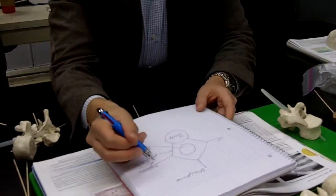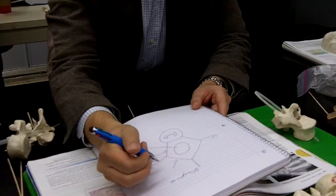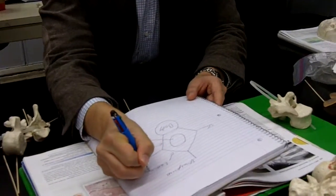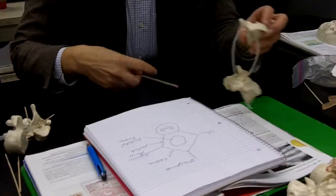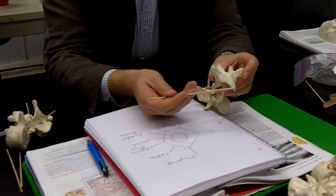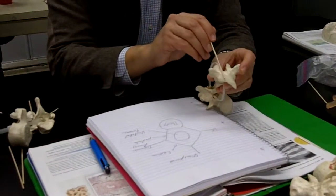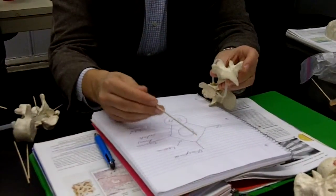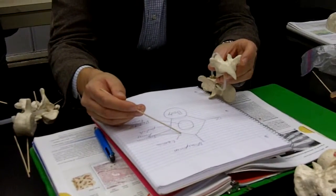Connecting the transverse process to the spinous process is going to be known as the lamina. Here's the transverse process, here is the spinous process, and connecting the transverse process to the spinous process is going to be the lamina. Does everybody have that?